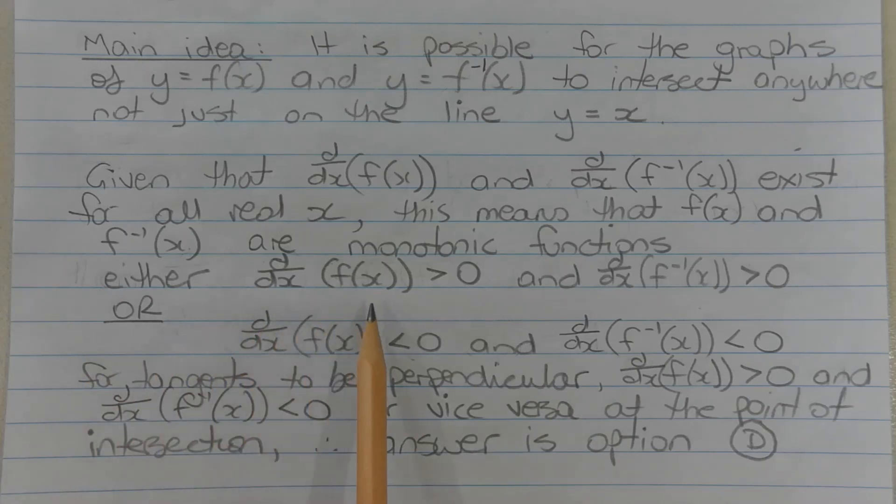Either the derivative of f(x) is positive and the derivative of f^(-1)(x) is positive, or the derivative of f(x) is negative and the derivative of f^(-1)(x) is negative over all real x.